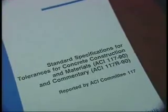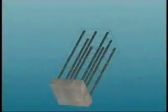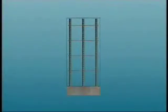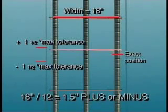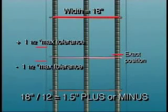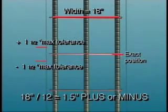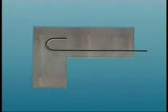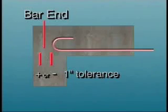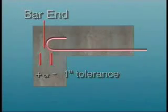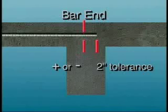ACI 117 allows a placing deviation from theoretical position for stirrups in beams and ties in columns equal to the depth of the beam or the width of the column in inches divided by 12. For instance, in a beam 18 inches deep or an 18-inch square column, the tolerance in placement is 1 and 1/2 inches. The tolerance for the longitudinal location of bends and ends of bars at discontinuous ends of members is limited to plus or minus 1 inch, but at other locations is allowed to be plus or minus 2 inches.